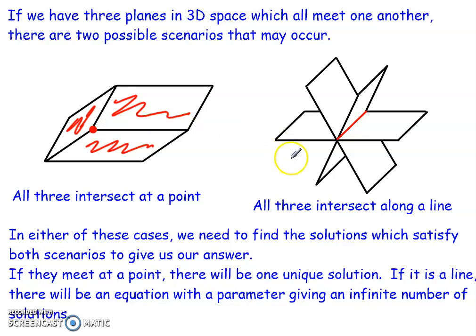There is also the possibility of all three planes intersecting along a line. Imagine we've got three bits of paper. We lay one flat and lay the other two bits of paper in some sort of diagonal line so they're not parallel to one another, and have those meet on the third bit of paper along a line. So we'd have all three planes intersecting along that line of intersection. In either of these cases, what we need to be able to do is find the solutions which satisfy the scenario.